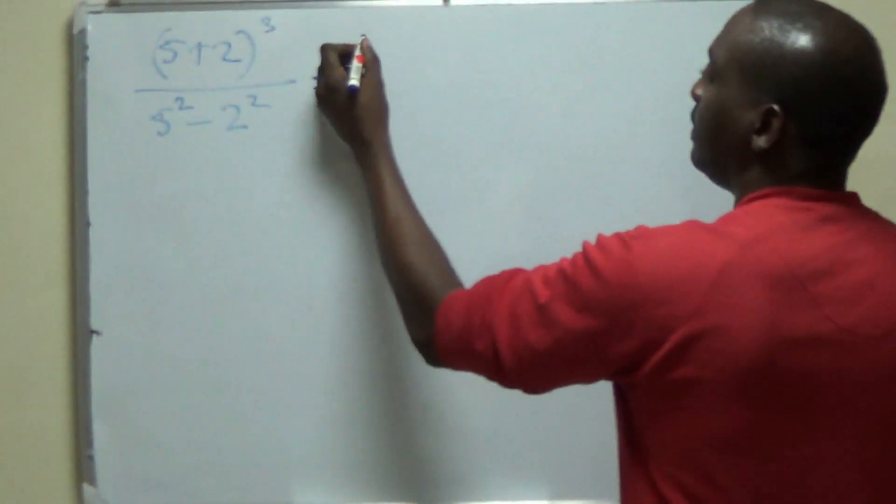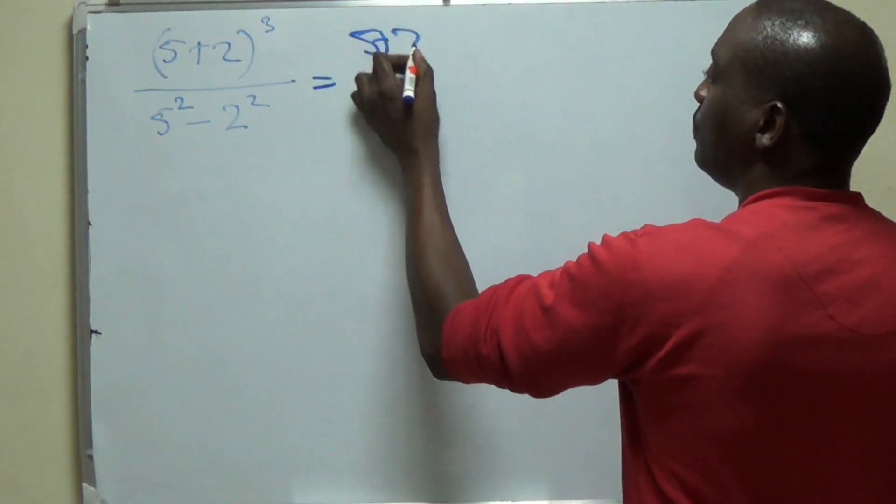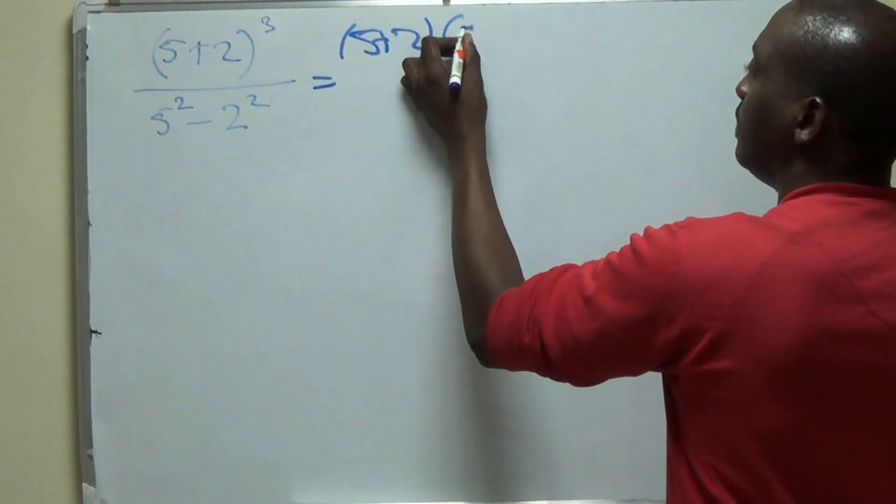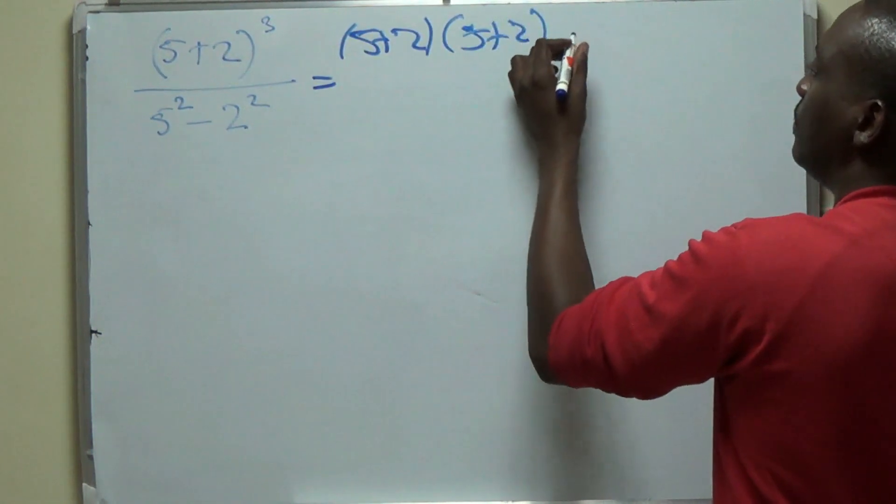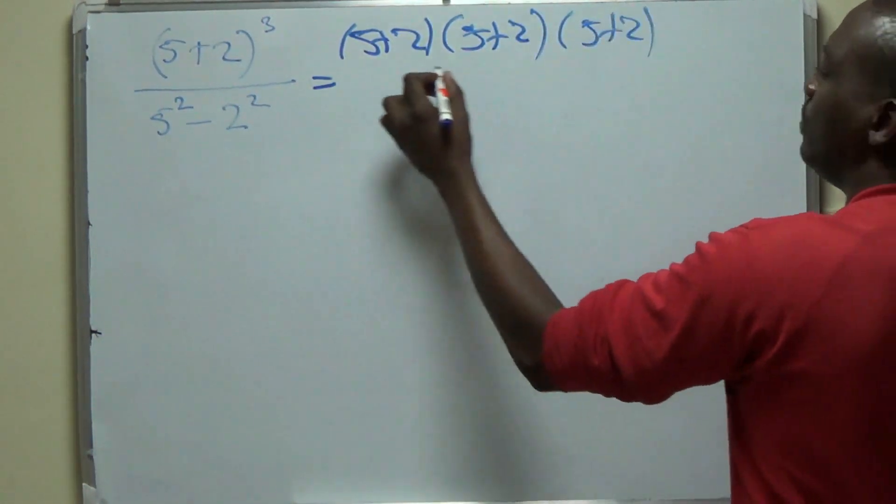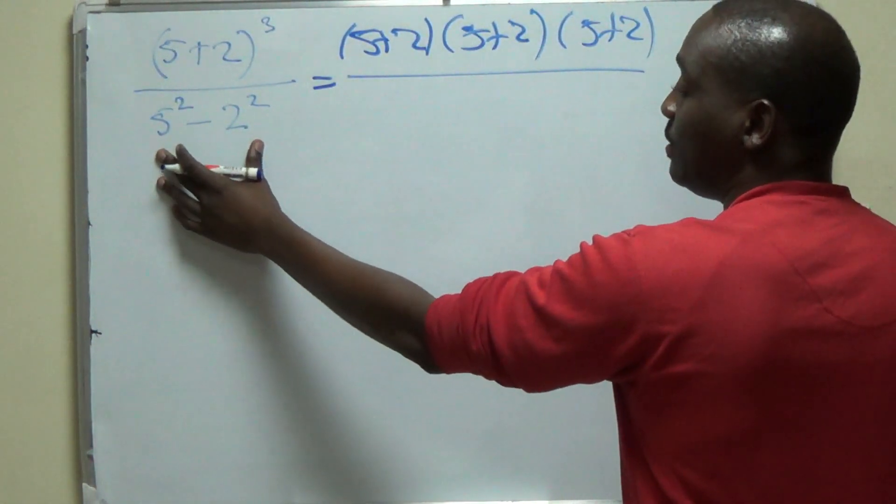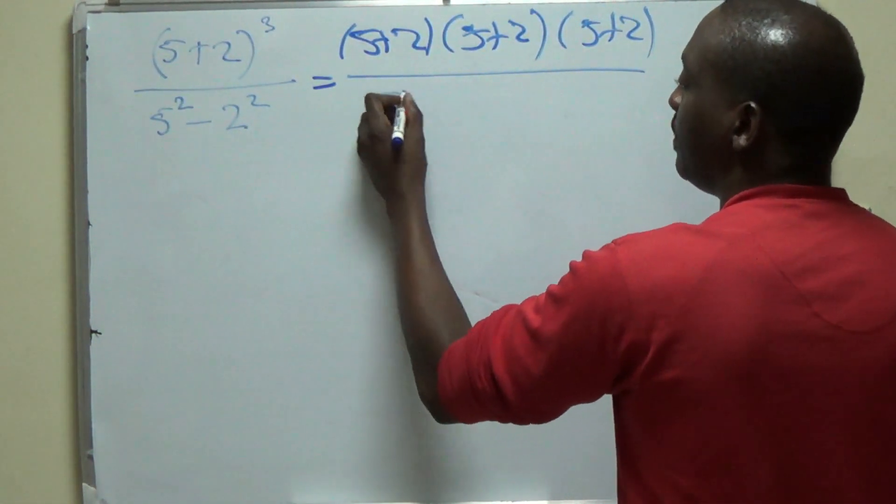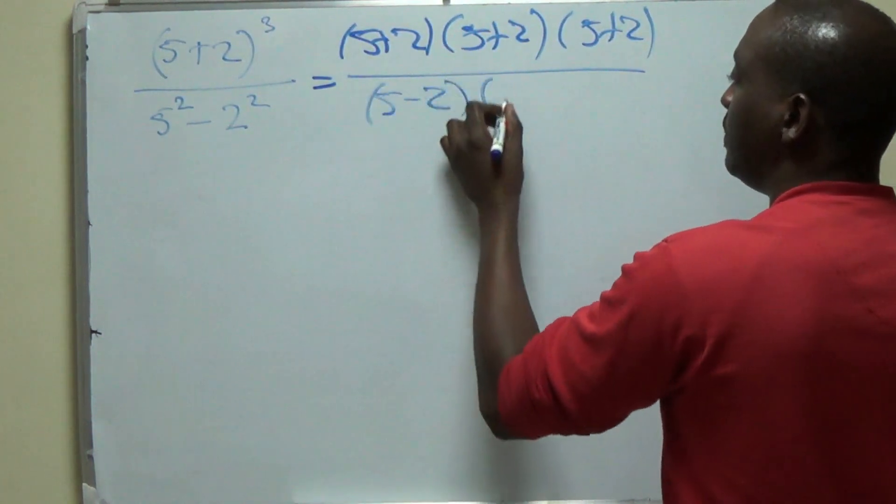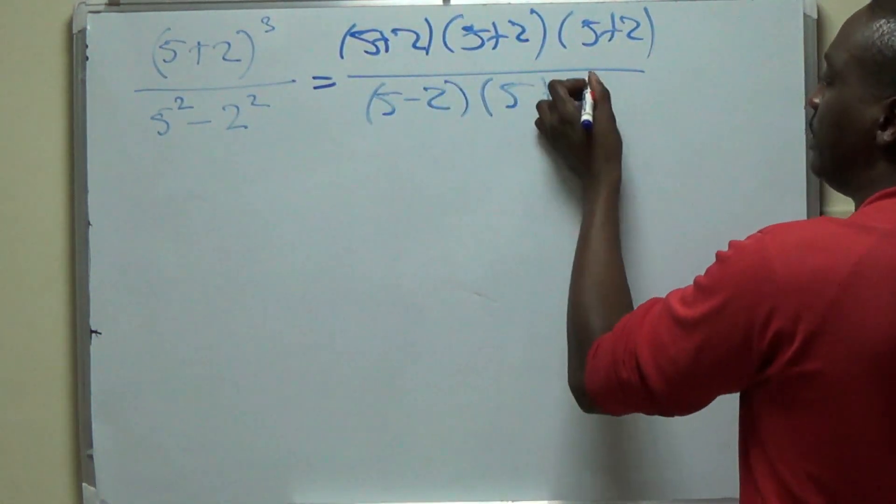So what we could do is write this out as 5 plus 2 into 5 plus 2 into 5 plus 2 all over - 5 squared minus 2 squared is a difference of two squares. We know that that would be 5 minus 2 into 5 plus 2.